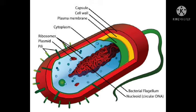The third function of the plasma membrane is that it is a site for attachment of the bacterial chromosome and plasmid DNA. Since bacteria have no true nucleus, the bacterial chromosome is attached to the plasma membrane.